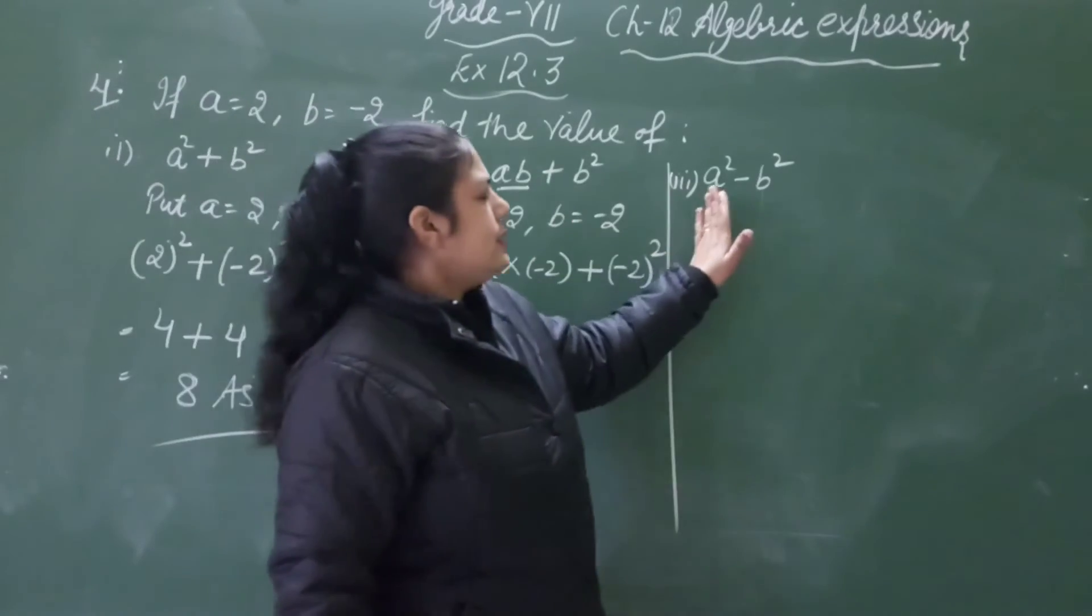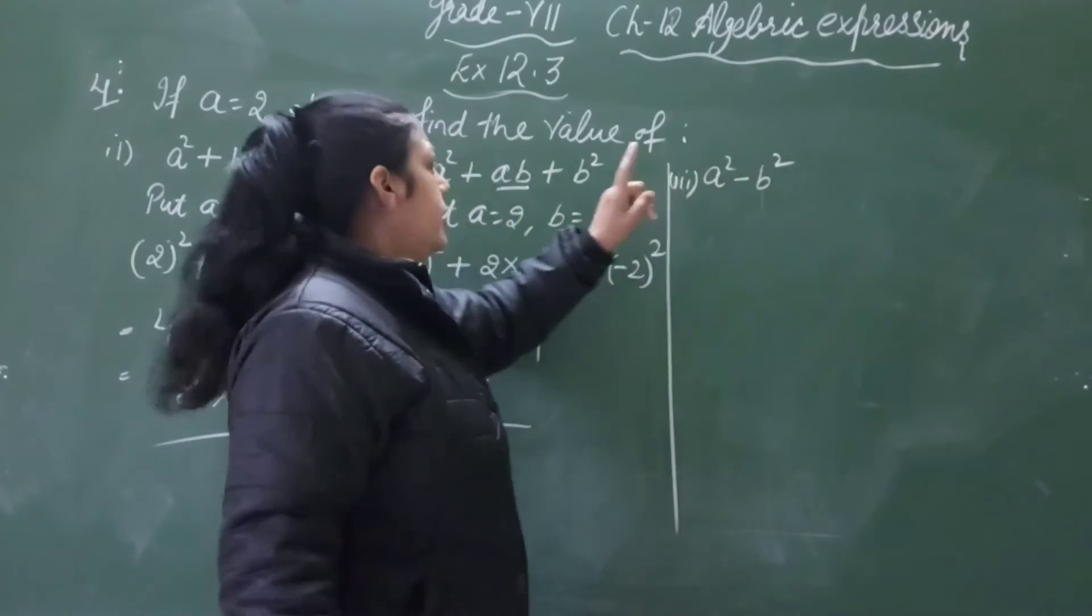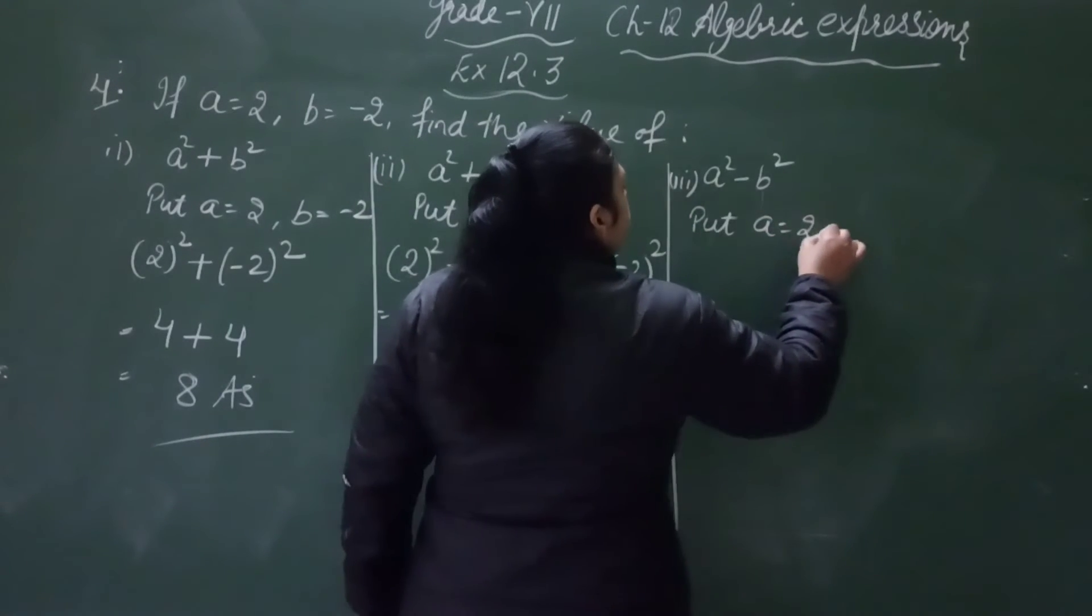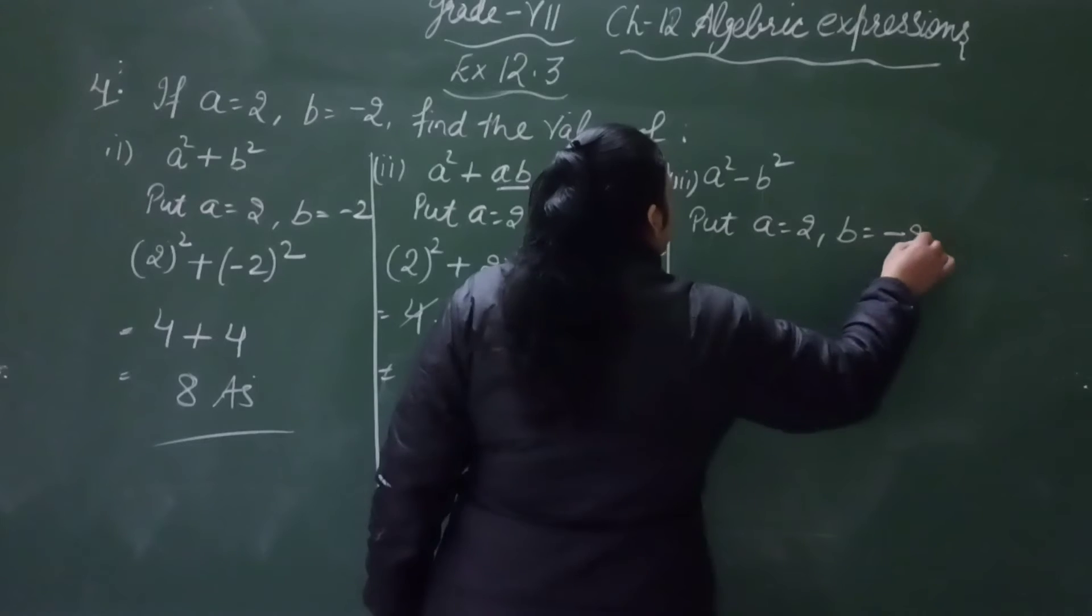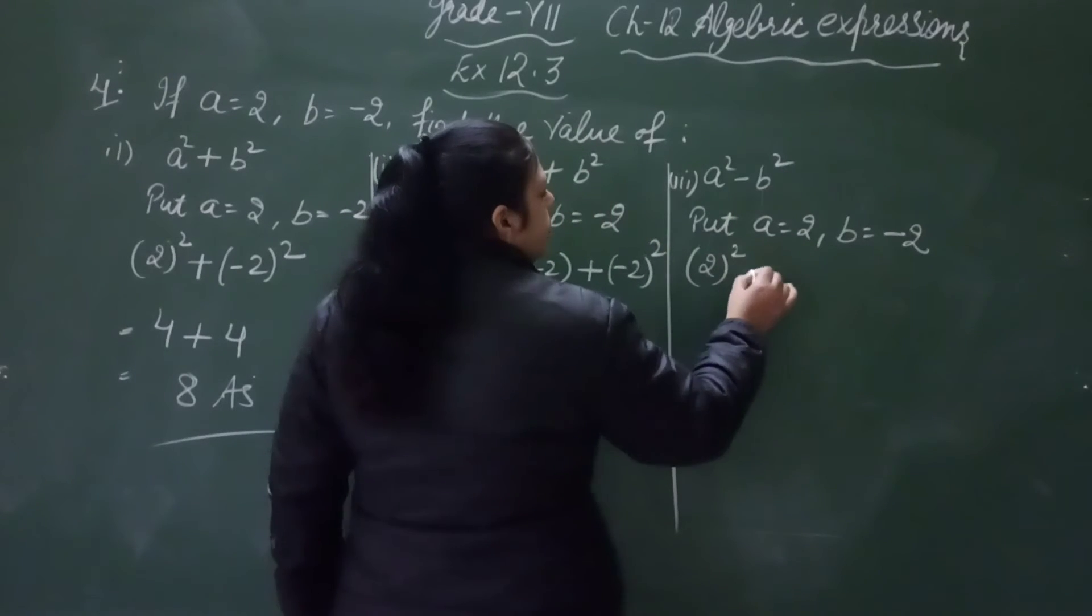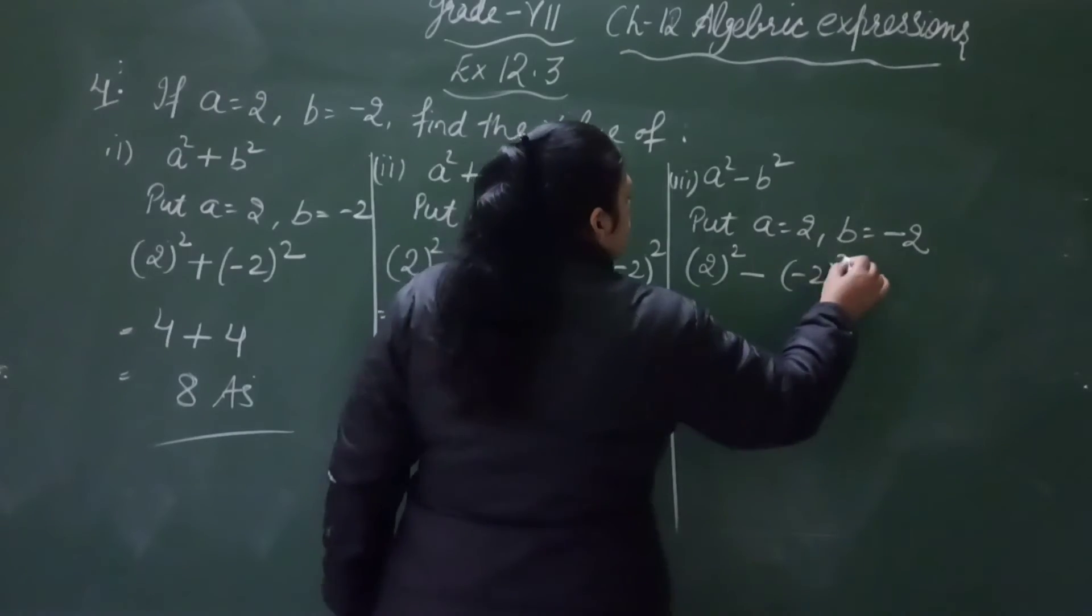Next, a square minus b square. a's value is 2. Put a is 2. b's value is minus 2. So then, putting the values, a is 2 square, b is minus 2 square.